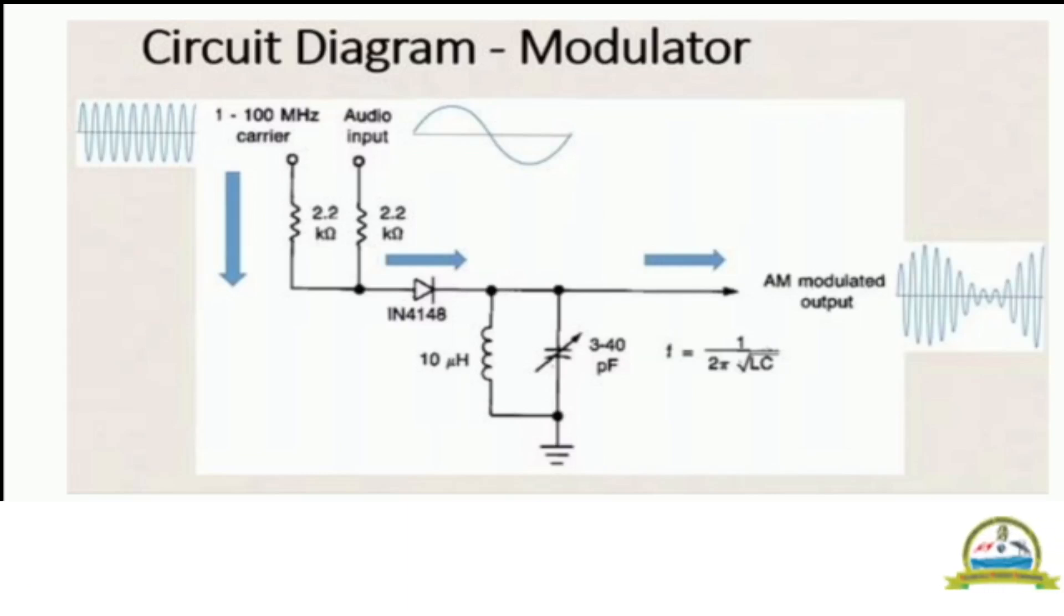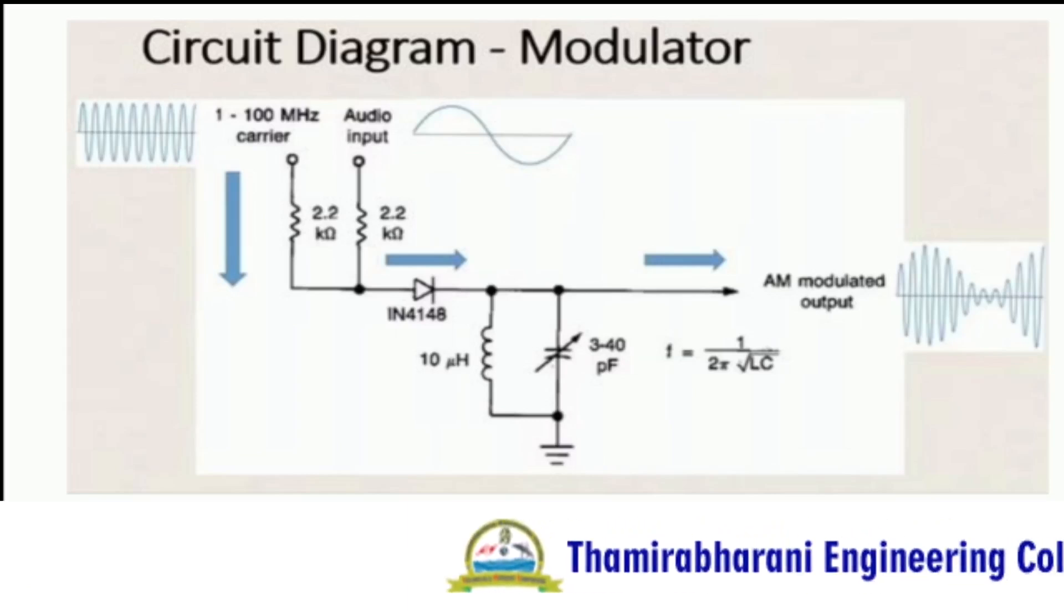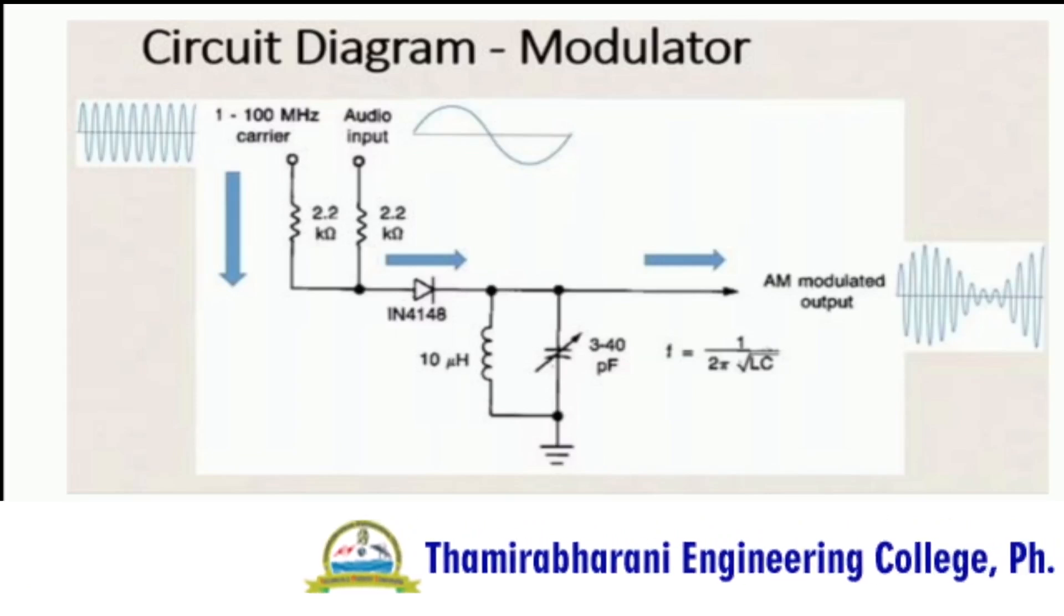A shunt resistor across the tank circuit can be used to reduce the Q of the circuit to permit high percentage modulation without unreasonable distortion.